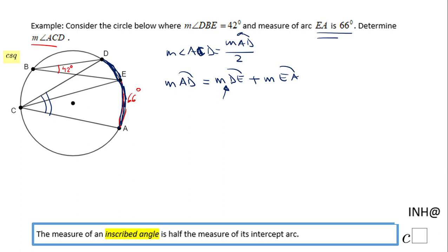For finding the measure of arc DE, we're going to go back to this angle, angle DBE. That angle is also an inscribed angle, so it's going to be half of the intercept arc, which is DE. We're going to replace the measure of angle DBE here with 42 degrees and solve for arc DE just by multiplying by 2. So the measure of arc DE will be 2 times 42, which is 84 degrees.